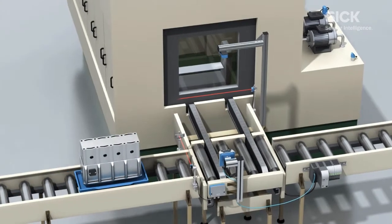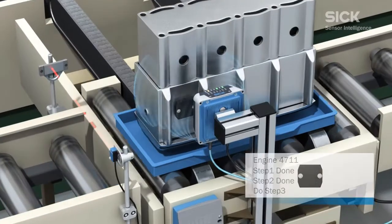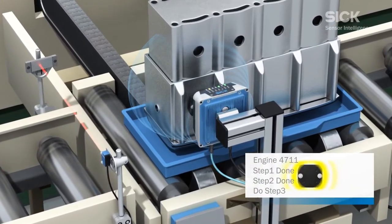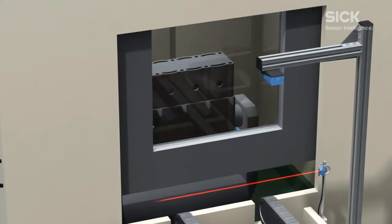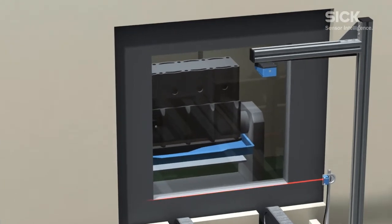On this production line, an on-metal transponder has been mounted directly on the motor block. The RFID RFU620 sensor reads out the transponder data and the production machine adjusts to the current variant.